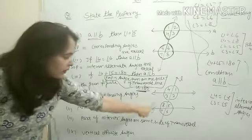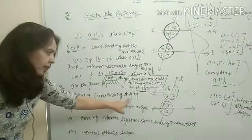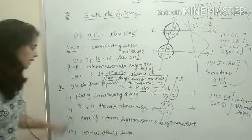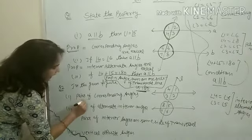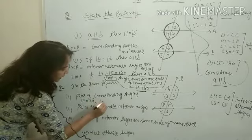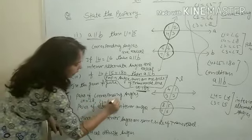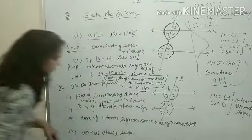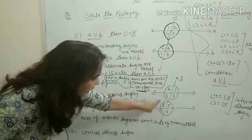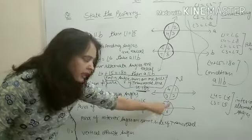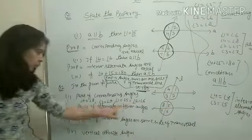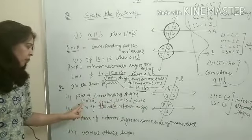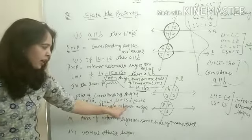Next question number 7: given a figure, find the first pair of corresponding angles. Angle 4 equal to angle 8, angle 3 equal to angle 7, angle 1 equal to angle 5, angle 2 equal to angle 6। Pairs: (angle 4, angle 8), (angle 3, angle 7), (angle 1, angle 5), (angle 2, angle 6) — these are the pairs of corresponding angles।